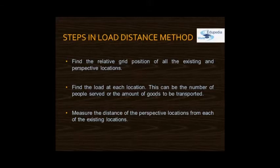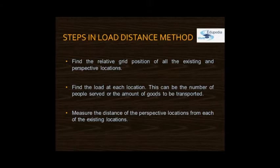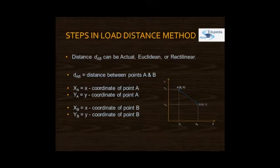Next, find the load at each location — the load could be the number of people served or the amount of goods to be transported, whether raw materials from supply centers or finished goods sent to market. Then, measure the distance of the prospective locations from each of the existing locations. Distance can be the actual distance, the Euclidean distance, or the rectilinear distance.